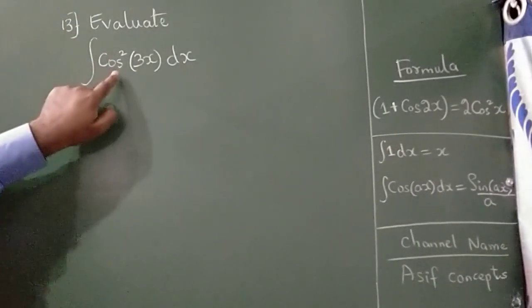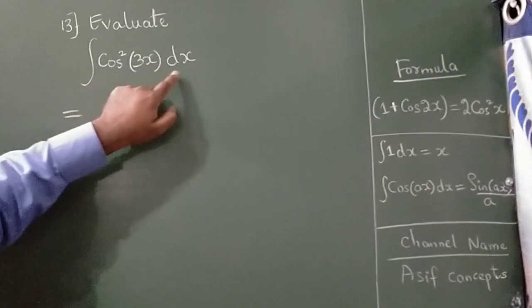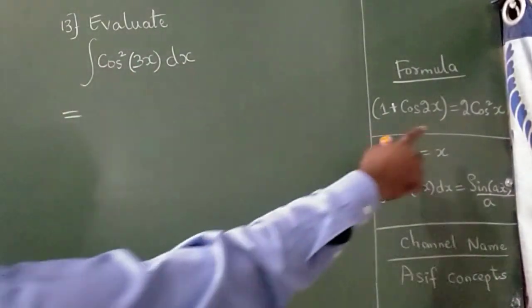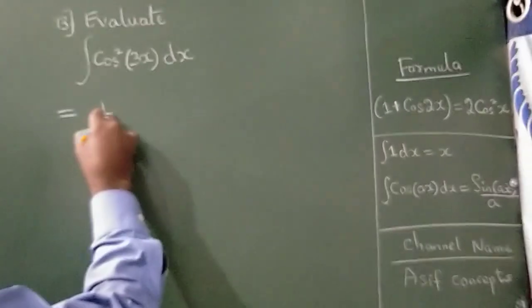Evaluate the integral of cos squared 3x dx. There is a formula here, okay, so I will write one-half